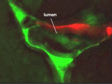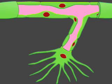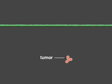Angiogenesis is critical not only in normal development and wound healing, but also in the development of tumors. A tumor must stimulate blood vessel formation to grow more than a few millimeters in size.